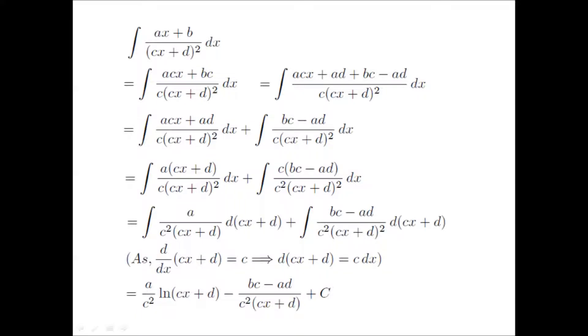Now it's easy to solve the two integrations. Solving the first integration we get a by c squared times the natural log of cx plus d. The second integration gives us bc minus ad divided by c squared times cx plus d, plus C, which is the arbitrary constant of indefinite integral. Thank you.